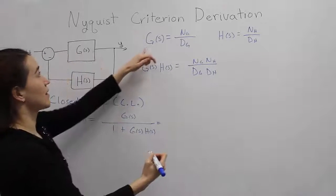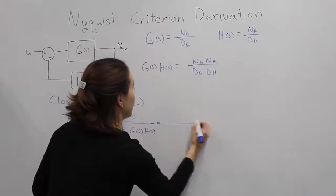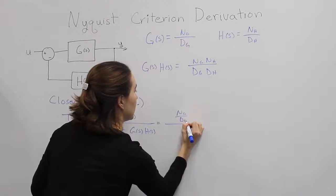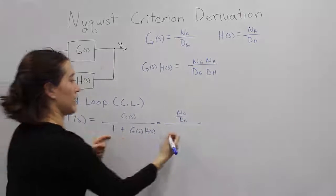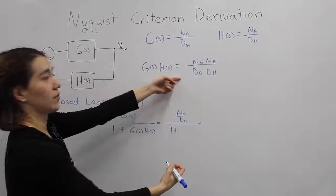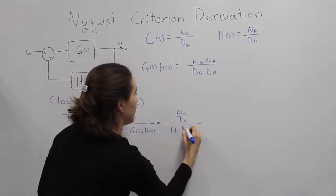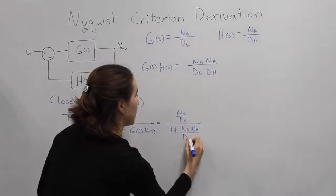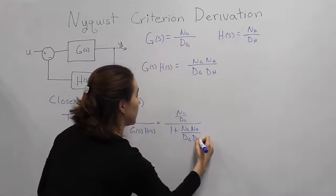And we would get G, which is just n of G over d of G, and then 1 plus this term right here. So we have n, numerator of G, n of H, over denominator of G, and denominator of H.